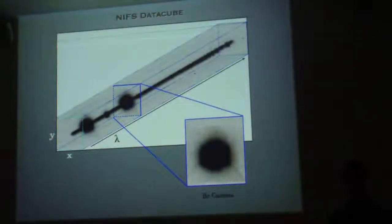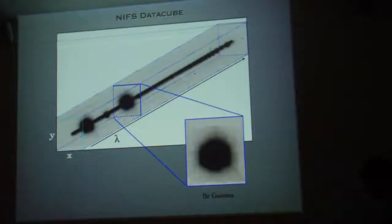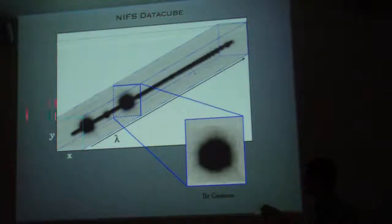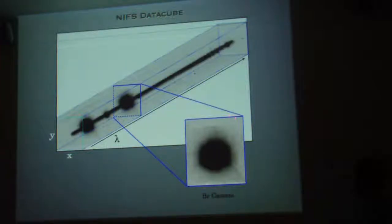The advantage, then, of an integral field spectrograph is you can make a data cube. This is the power of an integral field spectrograph. What I'm showing here is a data cube of our observation. This is a continuum. Wavelength goes in this direction, and then Y, X, or declination and right ascension. Here, this is the Brackett gamma line.